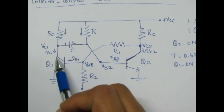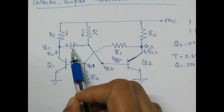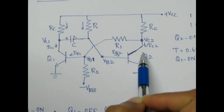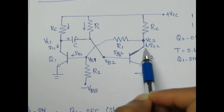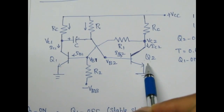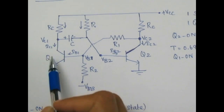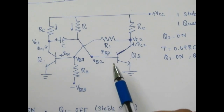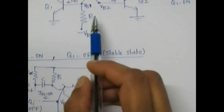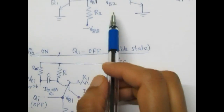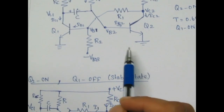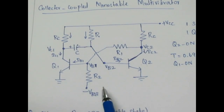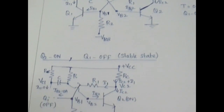After a particular time period, based on capacitor discharge through the base of Q2, after a time period T, Q2 will enter into on state and Q1 will enter into off state. This is the next stable state. We will find the stable state voltages and currents, and similarly in quasi-stable state we will also find the quasi-stable state voltages and currents.